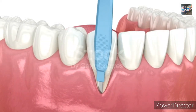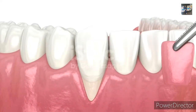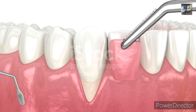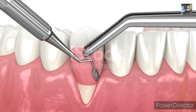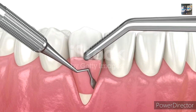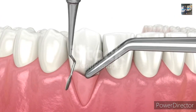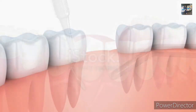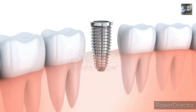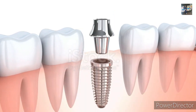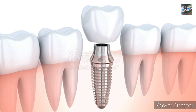Then gingivectomy, flaps, mucogingival surgeries, osseous surgeries, flap designs, then furcation and furcation types, and NUG. One more important topic is implants. We also study implants in periodontology, as well as in oral surgery and prosthodontics. This is important because we also study bone grafting here.